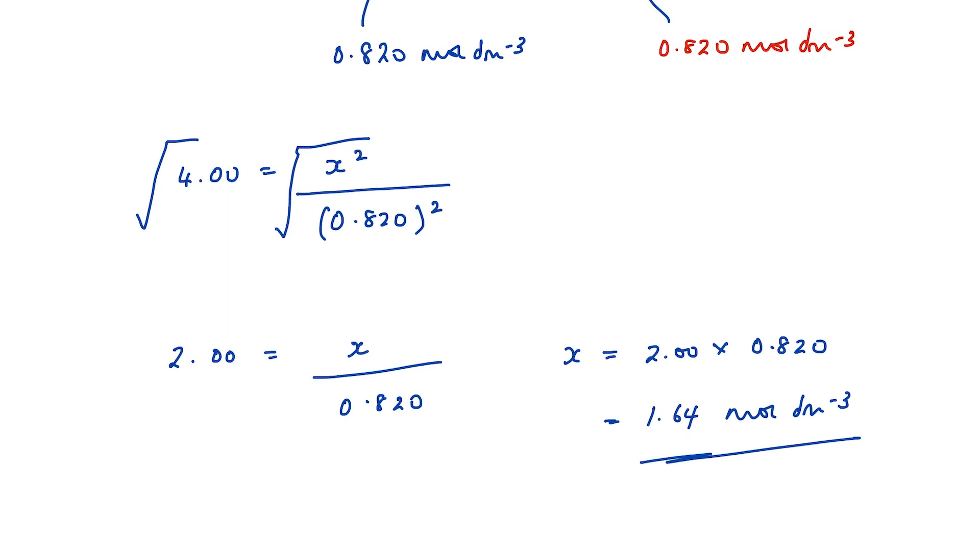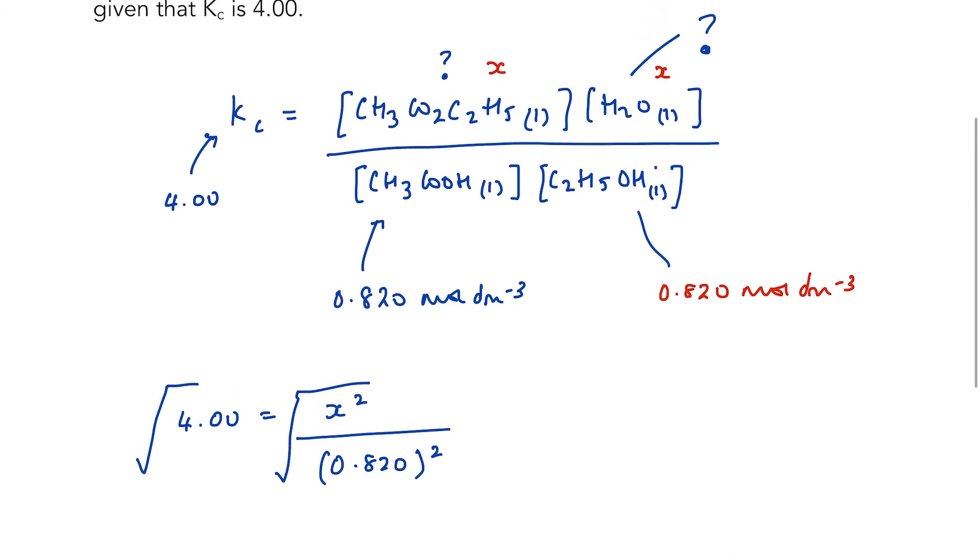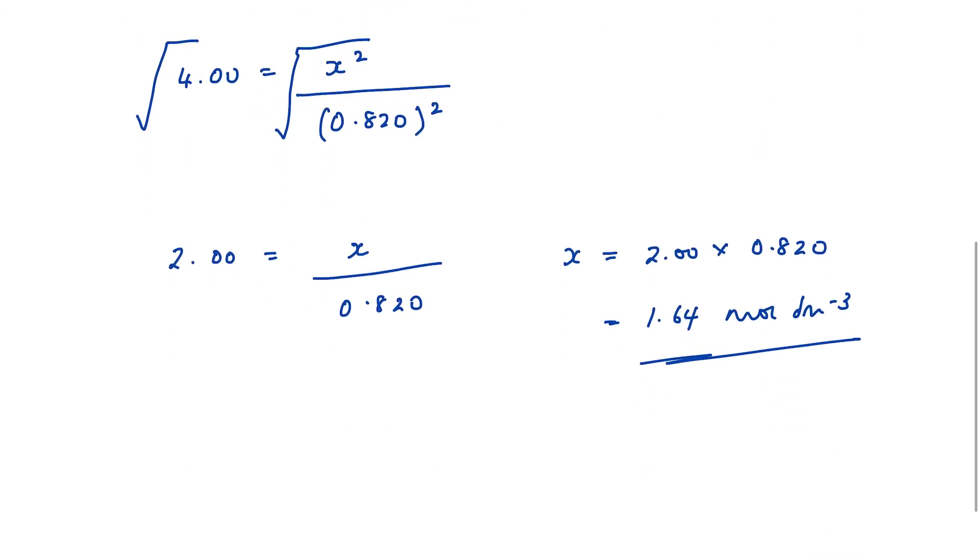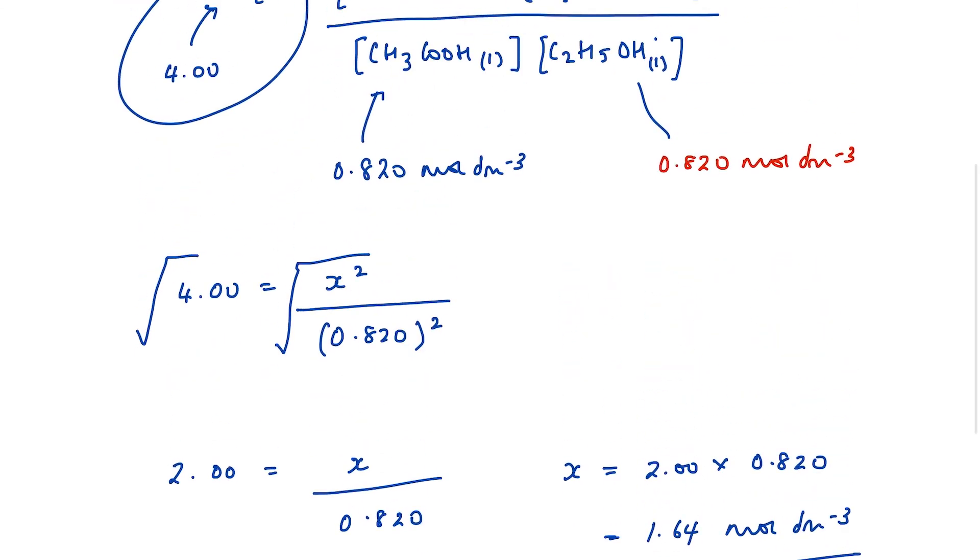This seems entirely reasonable as an answer. It is the correct answer because I know that my equilibrium constant is 4, it's greater than 1, so the concentration of my products must be quite a lot bigger than the concentration of my reactants. And 1.64 is quite a lot bigger than 0.820.